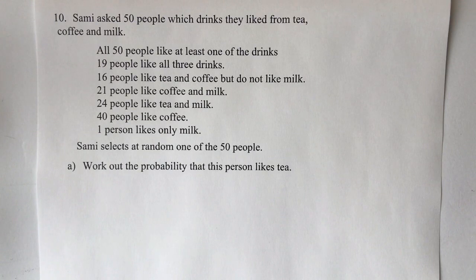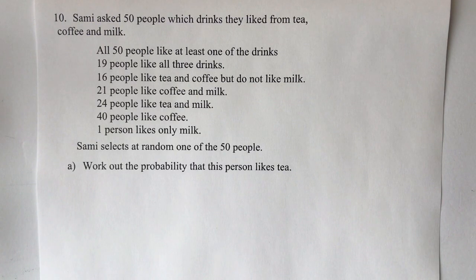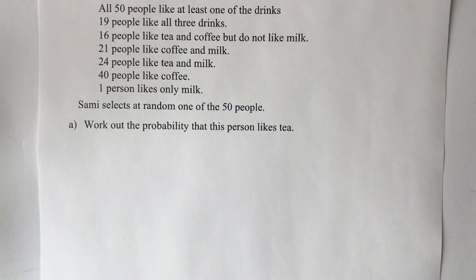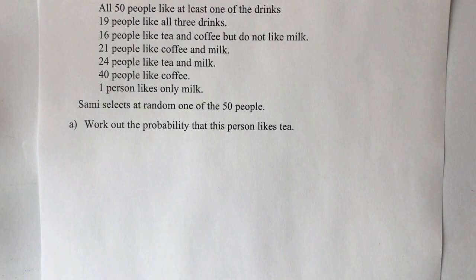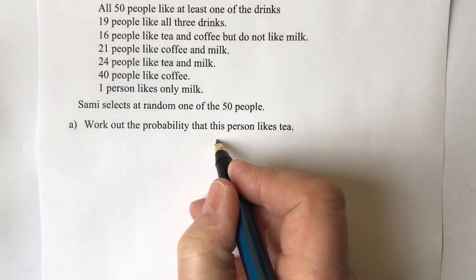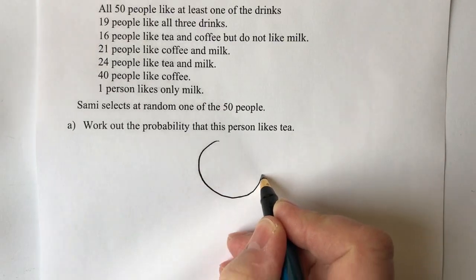Sammy asked 50 people which drinks they liked from tea, coffee, and milk. All 50 people like at least one of the drinks, and then it gives you a whole load of information that we're going to show on a Venn diagram. The way I'm going to do that is to draw three big circles — each circle will represent one of the drinks.